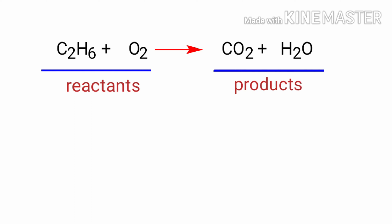In this equation, the reactants are Ethane and Oxygen and the products are Carbon Dioxide and Water. If you look at this equation, the equation is not balanced.